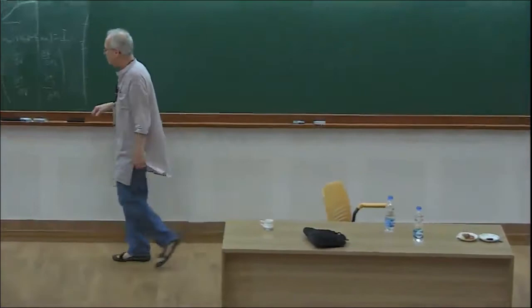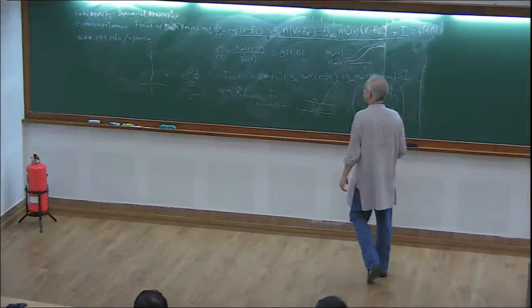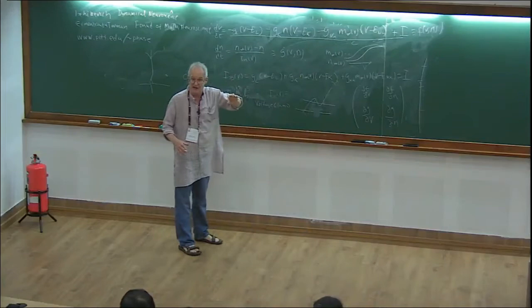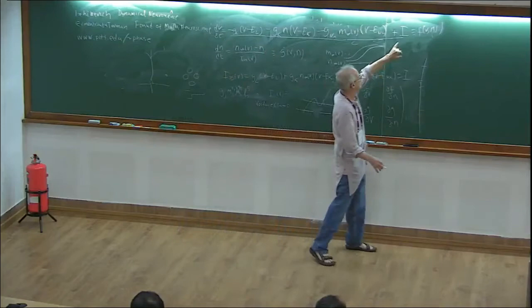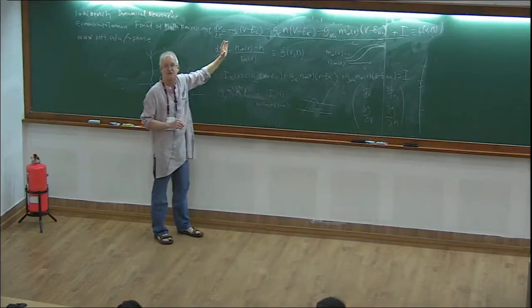We've established that we can study the stability of this because it's a two-dimensional system. The main parameters I'm going to use are: one is the current, because that's one that's really easy to manipulate by the experimentalist, and the other is roughly the time scale of the potassium.